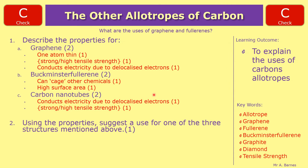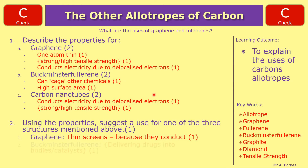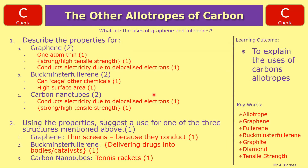Moving on to the uses: for graphene, something like thin screens because they can conduct electricity would be useful. For Buckminster fullerene, delivering drugs into the body or as catalysts because of its high surface area. And finally, carbon nanotubes as tennis rackets because they're strong and light.